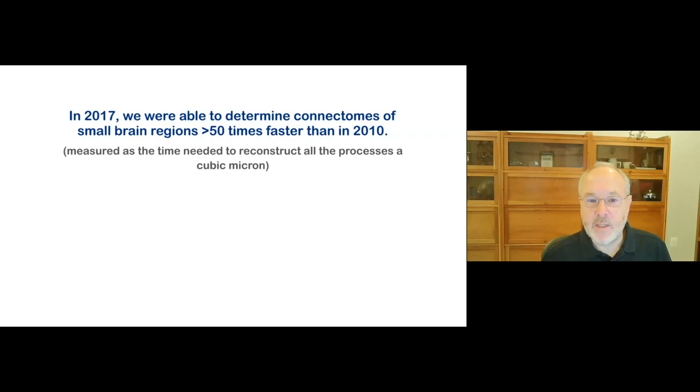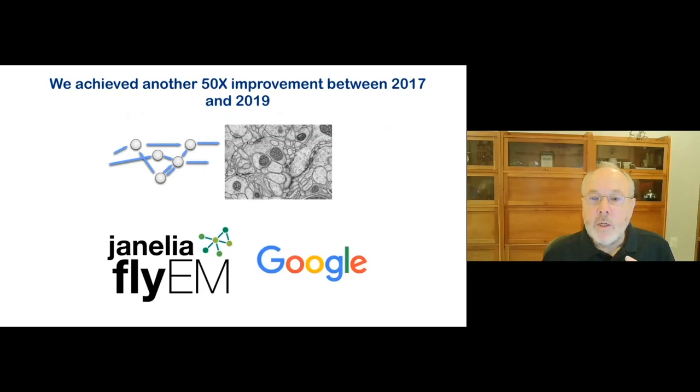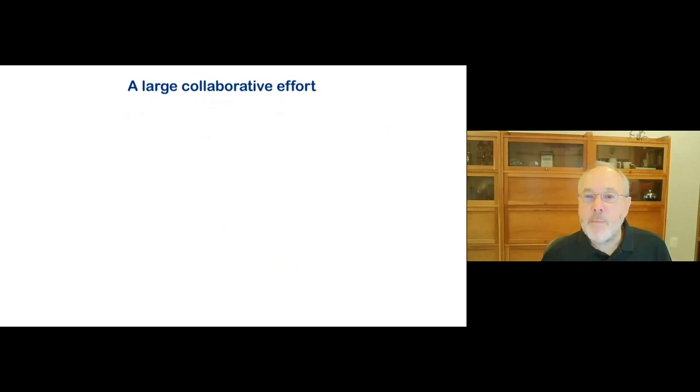We have been steadily improving the rate at which we can generate connectomes, but more progress was needed. Between 2017 and 2019, we achieved an additional 50-fold improvement, putting us in a position to tackle the full-fly connectome. A large part of this was achieved through a collaboration with Google.